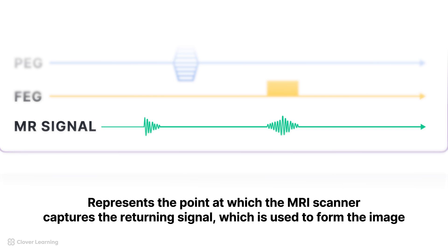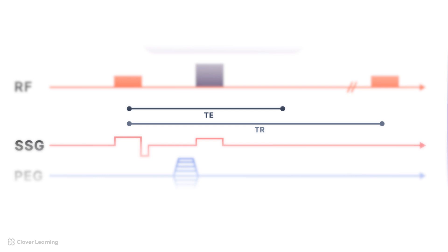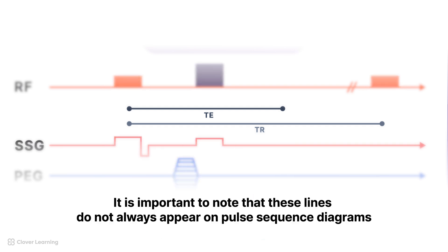The final lines we'll discuss depict the TR and TE periods. These are depicted along the horizontal axis of the diagram, with other events shown in relation to this timeline, allowing technologists to understand the sequence's pace and synchronization. It is important to note that these lines do not always appear on pulse sequence diagrams.